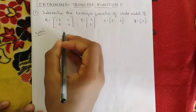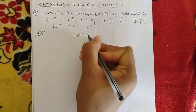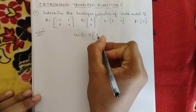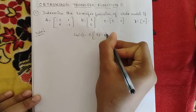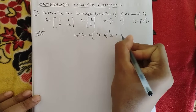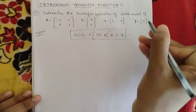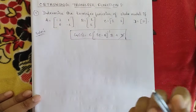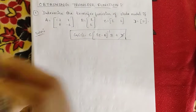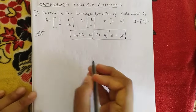We need to find the transfer function. The formula we derived in the previous video is: G(s) = C · (sI - A)⁻¹ · B + D. Since D is given as zero, we drop that term. For this formula, first we need to find the (sI - A)⁻¹ term.